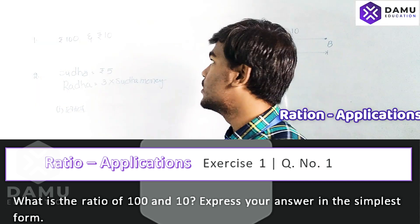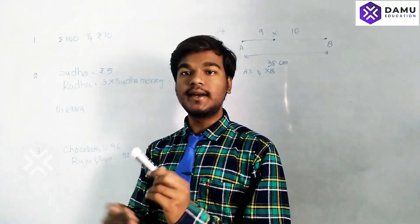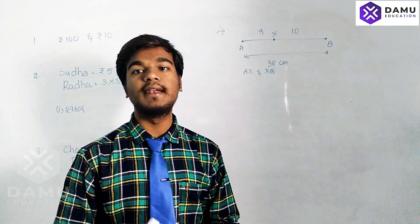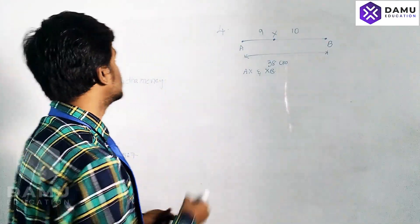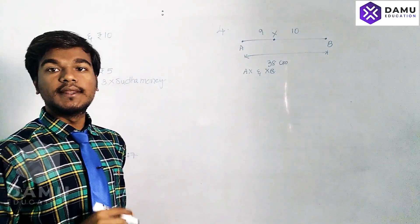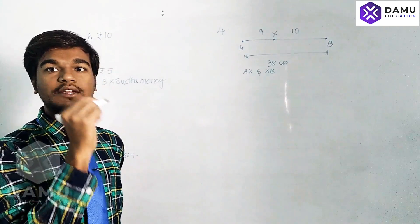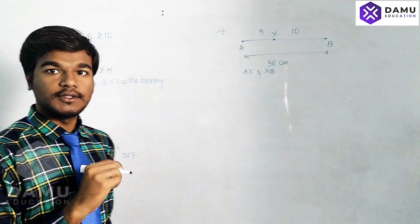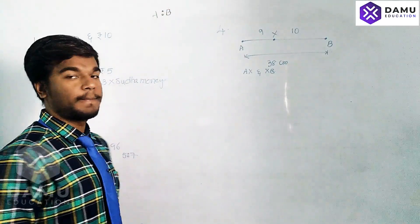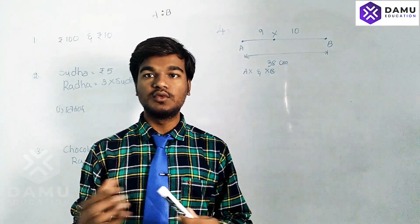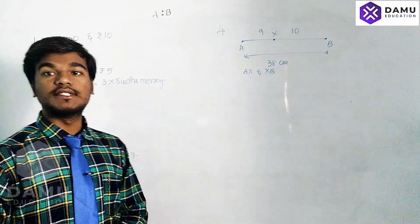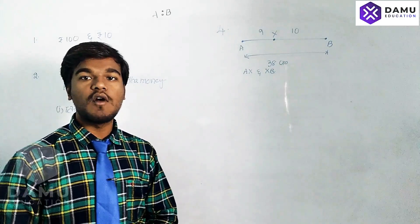What is meant by ratio? Let's take the ratio of A and B. The ratio symbol is 'is to', shown with a colon. So A is to B is written as A:B — that is, two dots — A is to B, like that we are going to write.